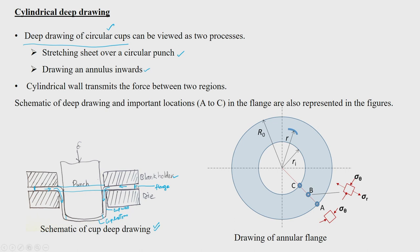The annulus region — this diametrical region — moves in the inward direction, and the cup wall transmits force between these two regions. From a top view, the right side diagram shows drawing of an annular flange. R₀ is your initial radius of the sheet, and Rᵢ is the inner radius, which is equivalent to the punch radius. You can also convert these into diameters — punch diameter and outer sheet diameter.